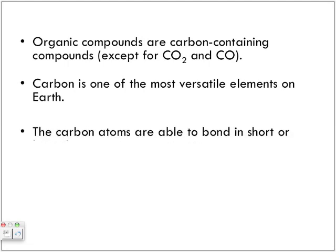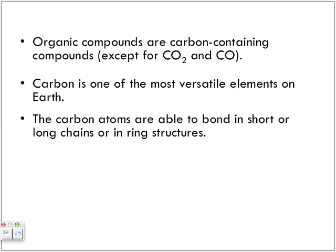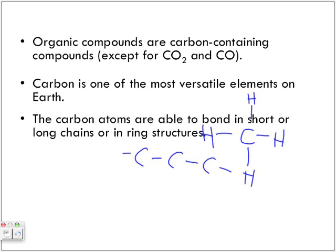Carbon is one of the most versatile elements on Earth. Carbon atoms are able to bond in short or long chains or in ring structures. Carbon contains four valence electrons, giving it four bonding sites in which other atoms — particularly other carbon atoms and hydrogen atoms — will bond covalently with the central carbon atom. We'll see small compounds like CH4 (methane), long carbon chains, and ring forms like glucose, where carbon atoms sit at each vertex.